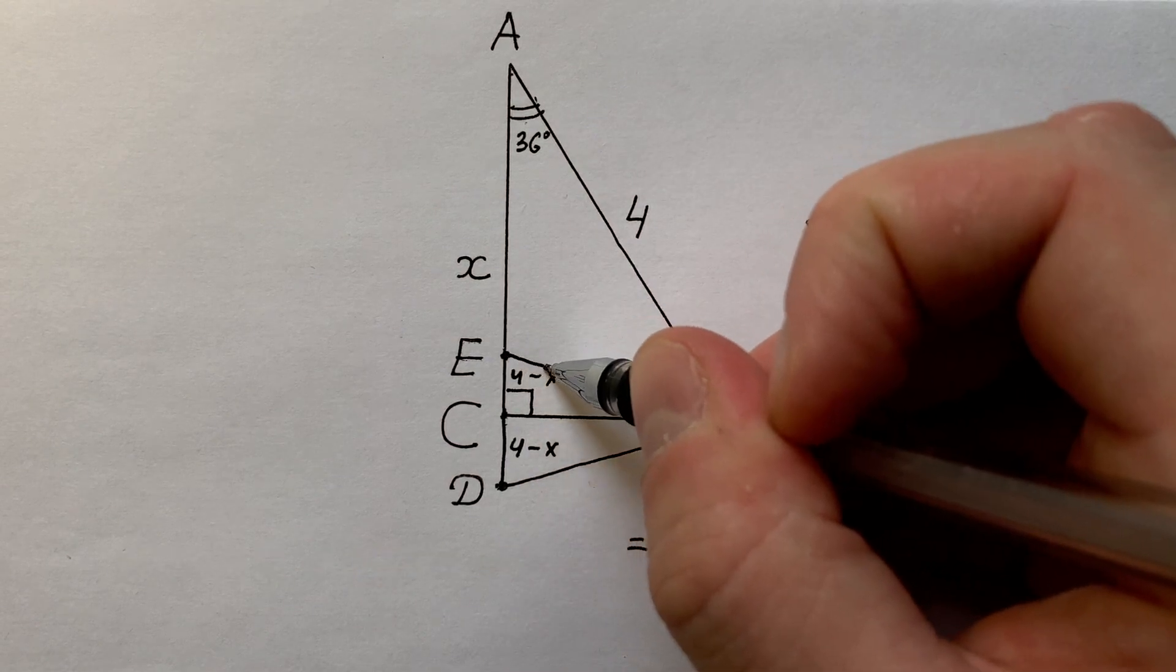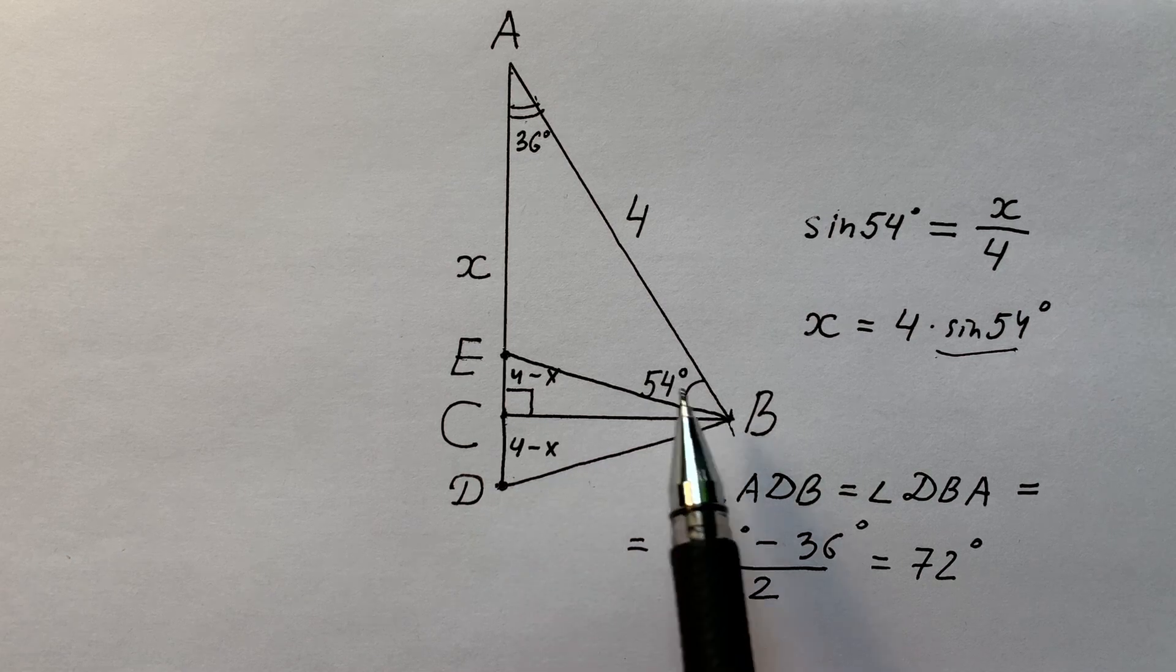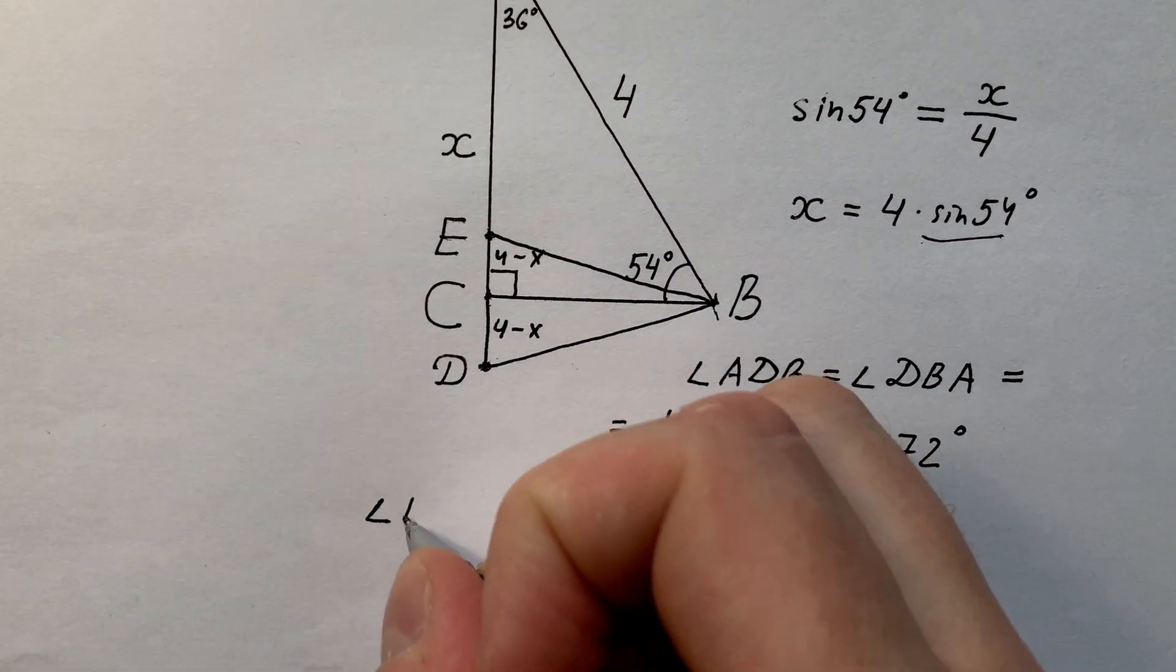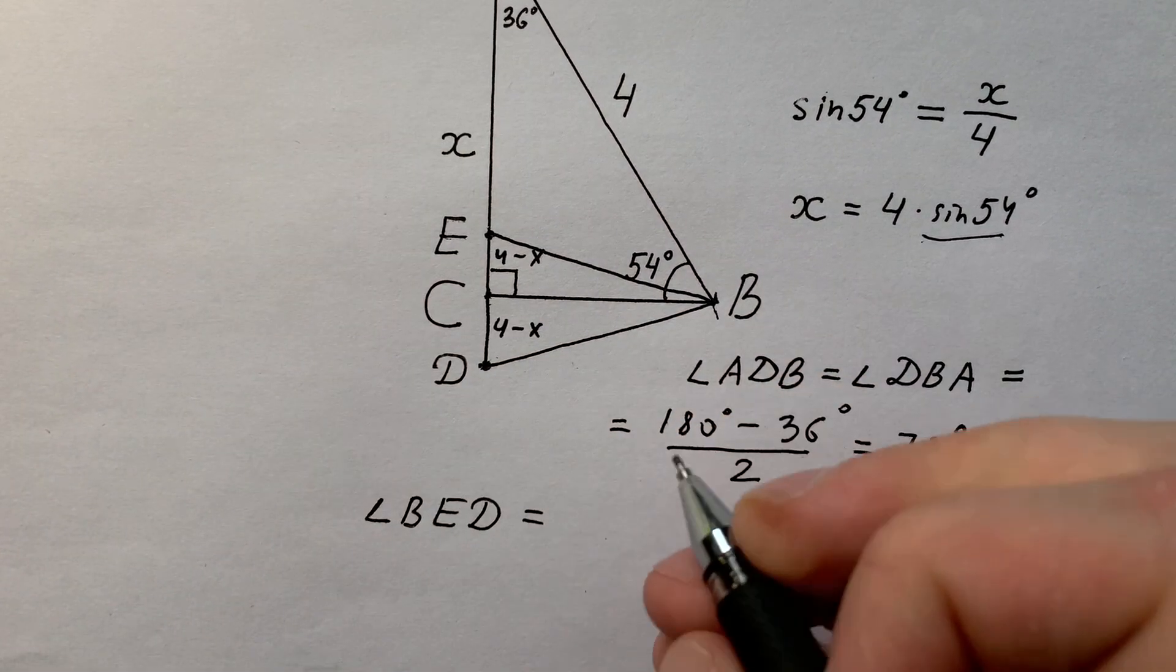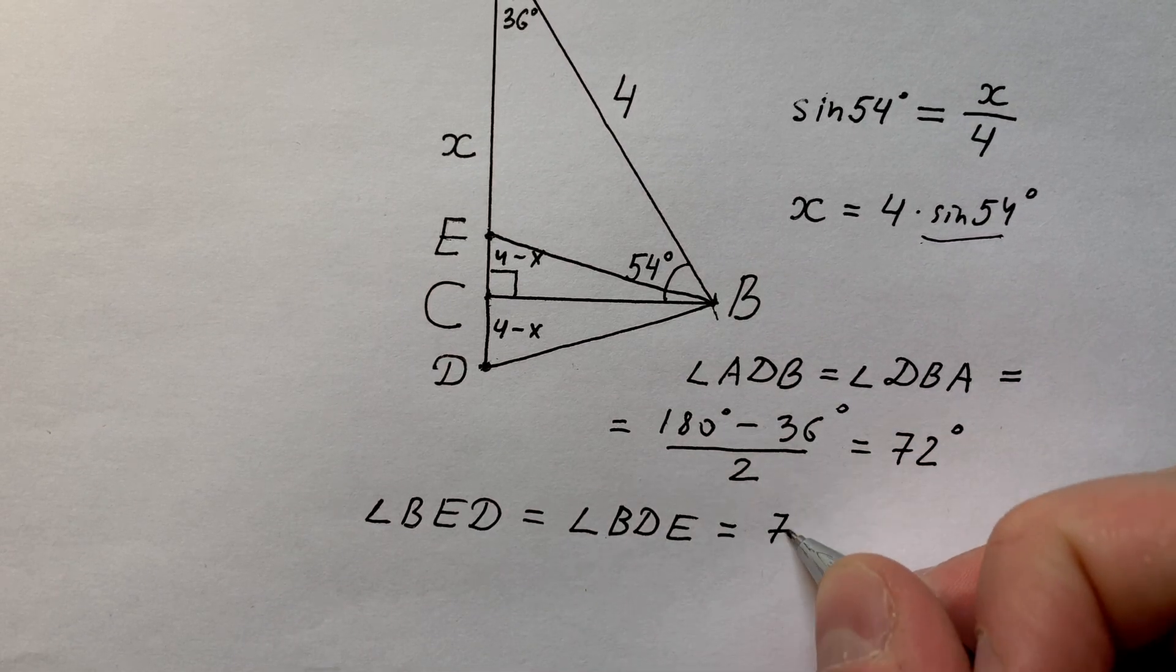Connecting points E and B, we have another equilateral triangle DBE. And angle BED equals angle BDE, and it equals 72 degrees.